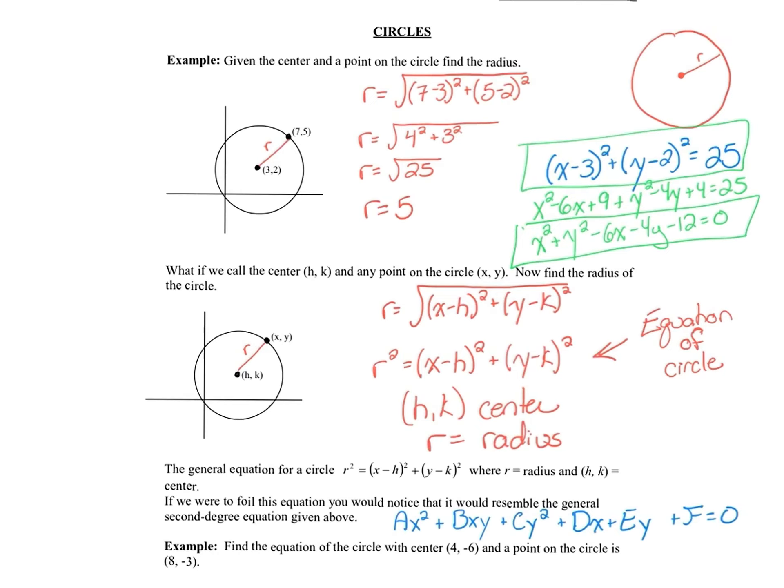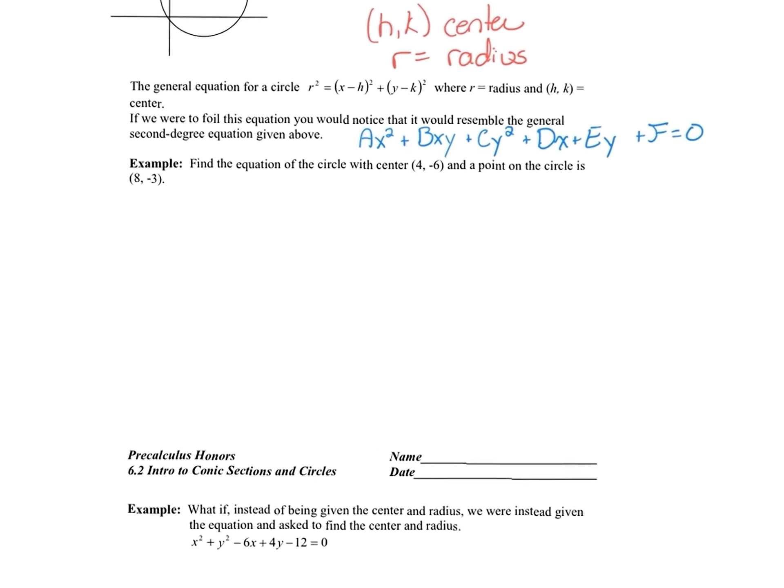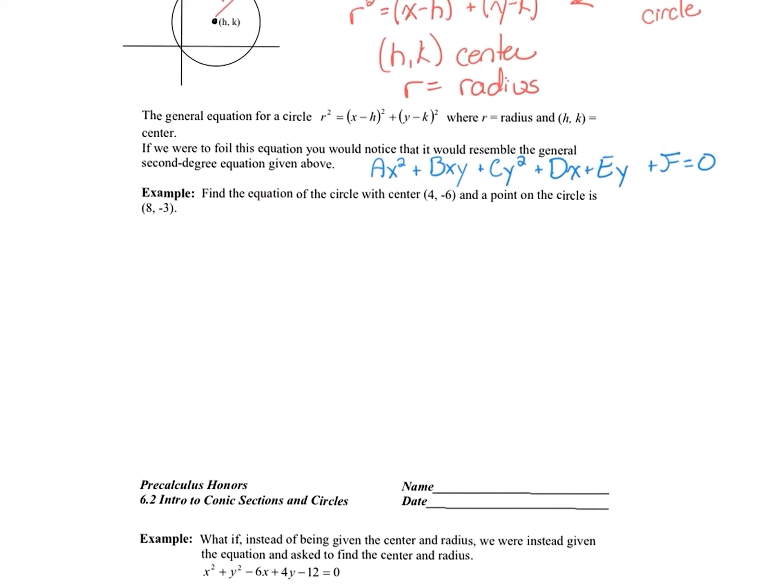Now, pause the video and try this example: find the equation of the circle with center at (4, −6) and a point on the circle at (8, −3). I'd like you to find this in both center-radius form and the general second-degree equation form. Take a minute and try it on your own.